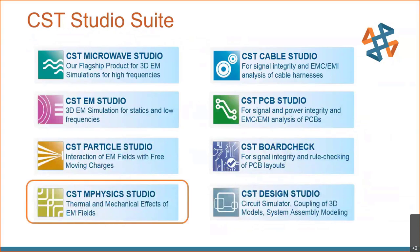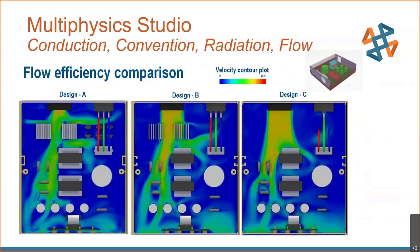CST Multi-physics Studio: the Conjugate Heat Transfer solver employs computational fluid dynamics to simulate thermal conduction, convection, and radiation simultaneously in both transient and steady-state regimes. The solver can also use a GPU for larger simulation models. In this example we see a top-down view of a large board, showing what happens when you change both fan speed and fan location and their overall effects on cooling.